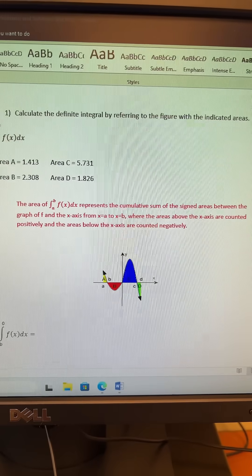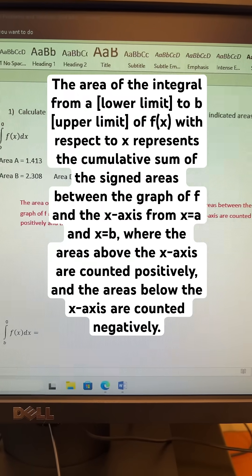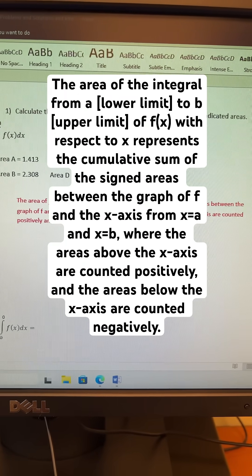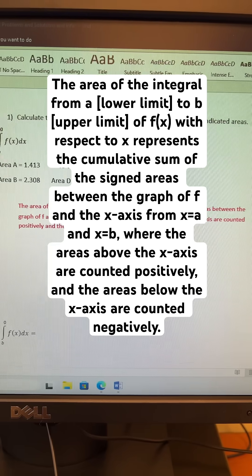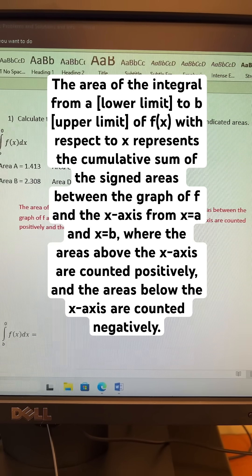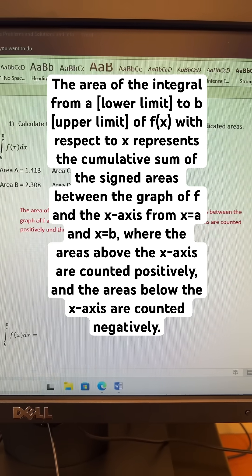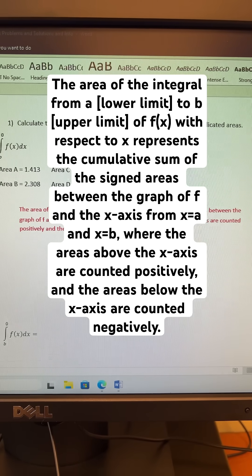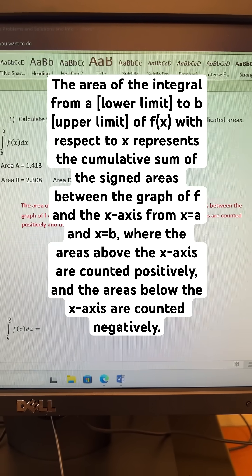Now let's know that the area of integral a to b f of x dx represents the cumulative sum of the signed areas between the graph of f and the x-axis from x equals a to x equals b, where the areas above the x-axis are counted positively and the areas below the x-axis are counted negatively.